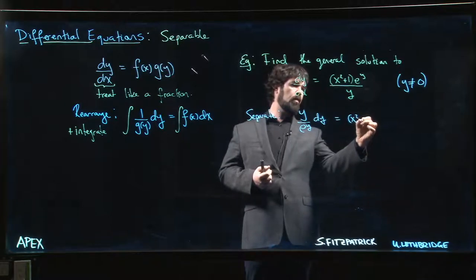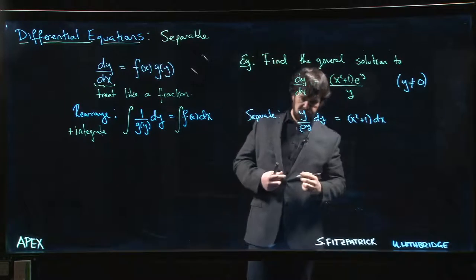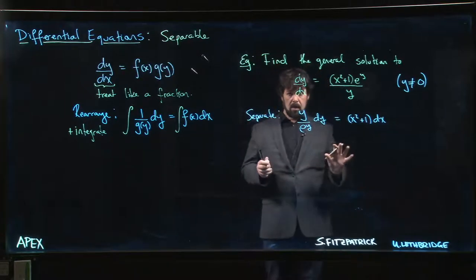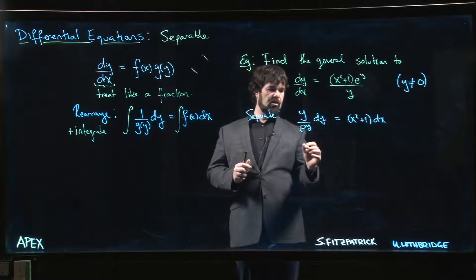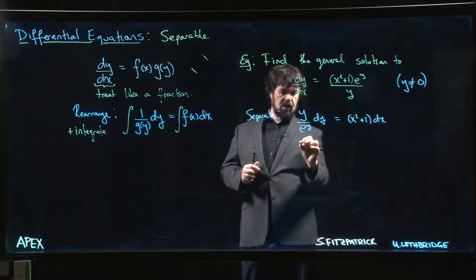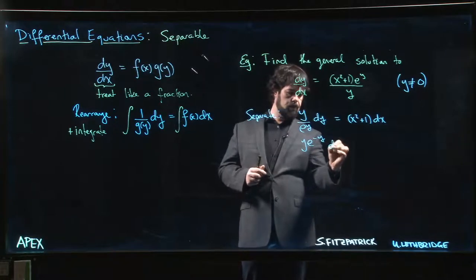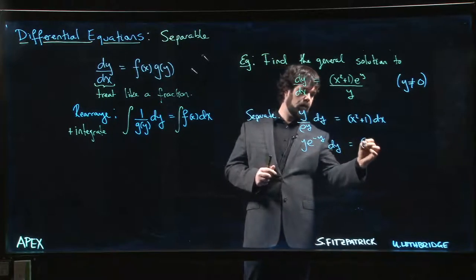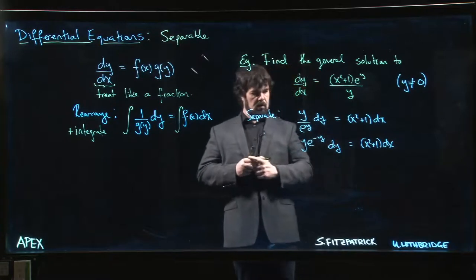And on this side we have x squared plus one times dx. Okay, now you're probably going to find it easier to do the integration if you rewrite this as y e to the minus y dy.